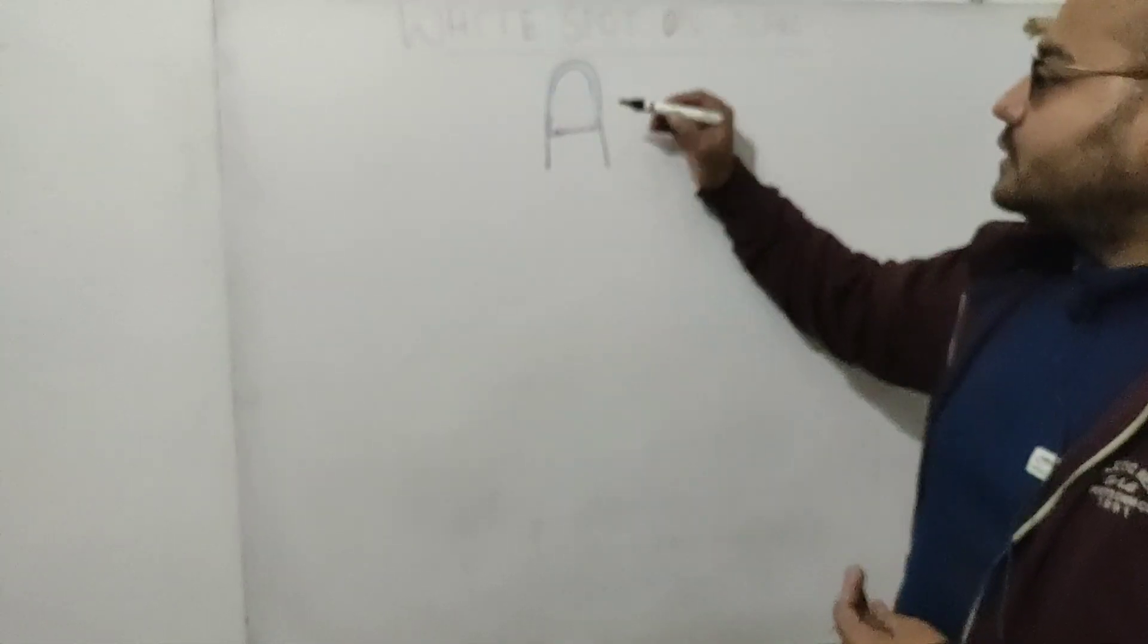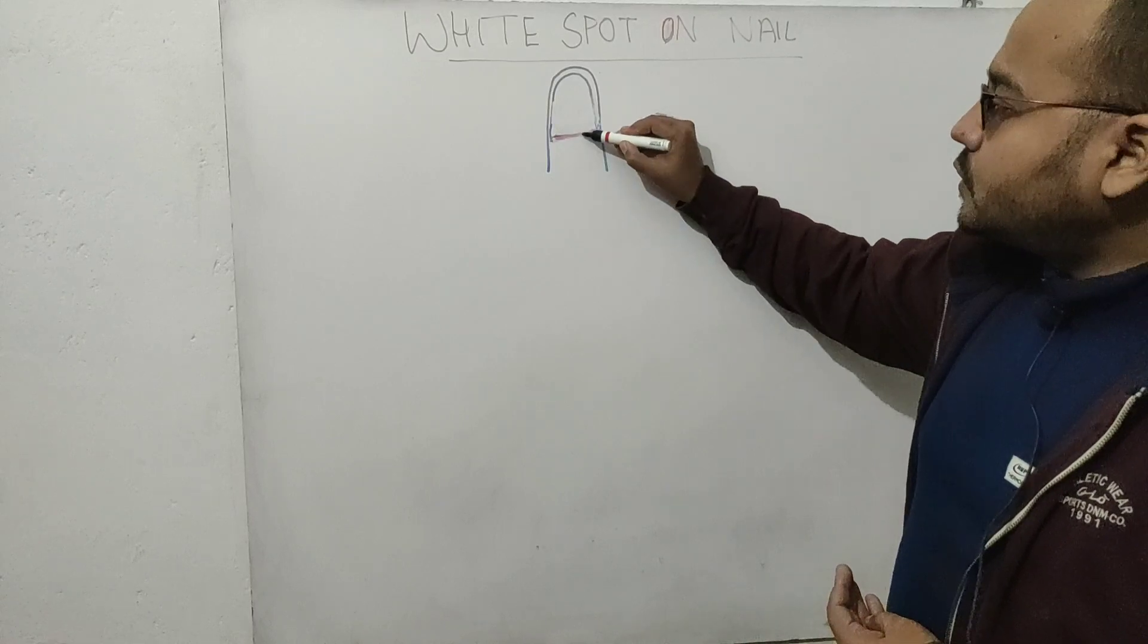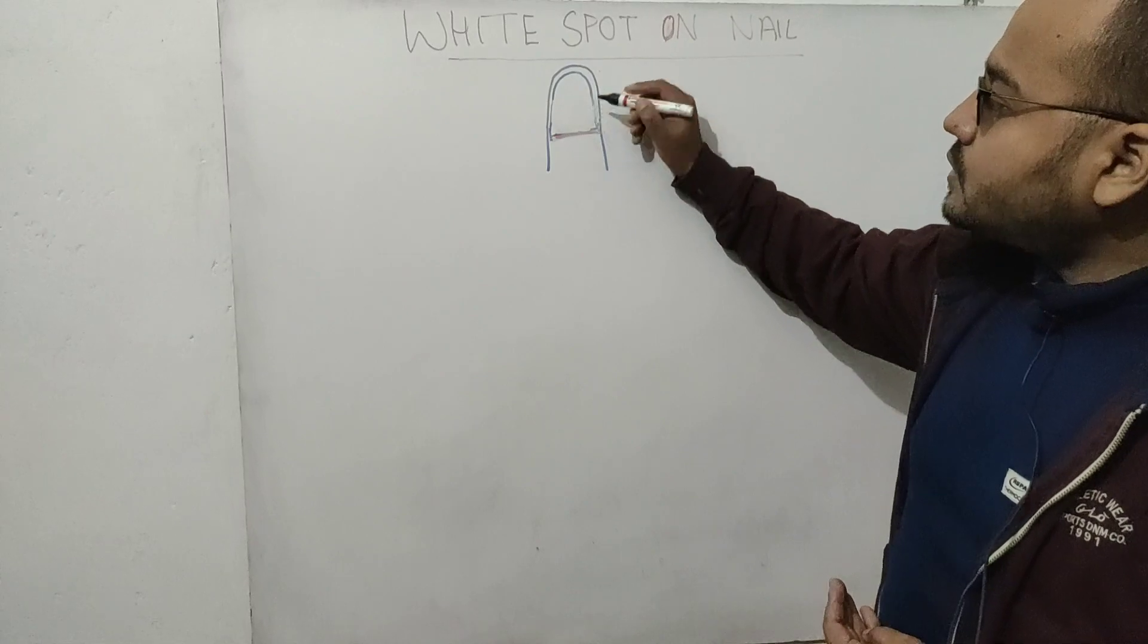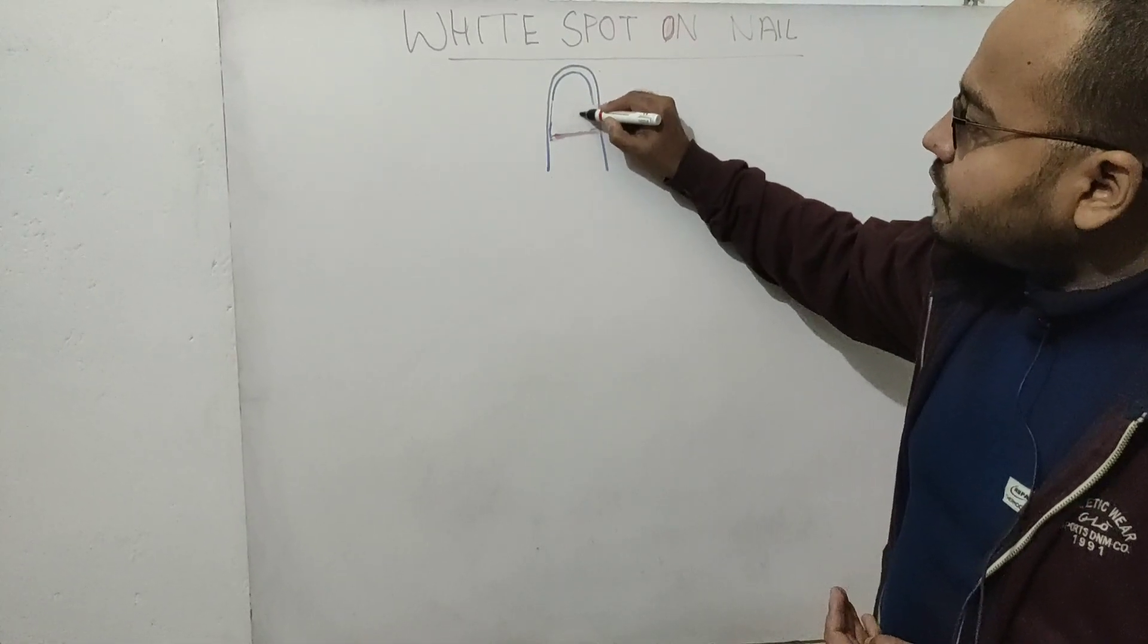After three months, this nail will grow up to here. So after three months, you will have a white spot somewhere around here.